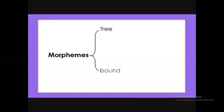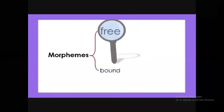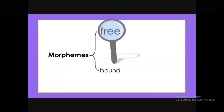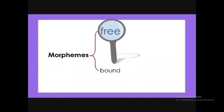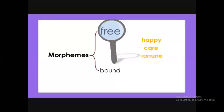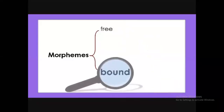Morphemes can be classified into two types: free morphemes and bound morphemes. Free morphemes are those that can stand alone in the sentence — they make sense and carry meaning by themselves; they are independent. A free morpheme is a word, but not any word is a free morpheme. Among these we have 'happy,' 'care,' 'fortune,' and 'quick.' Bound morphemes, on the contrary, are morphemes that cannot stand alone; they are dependent. Bound morphemes are not words.